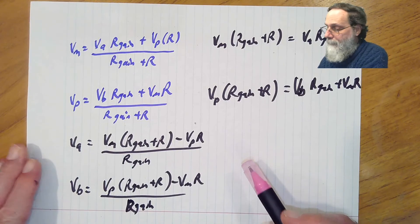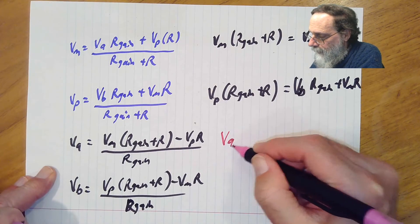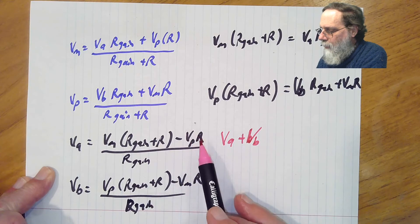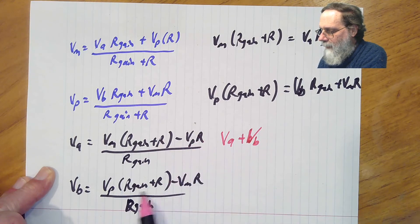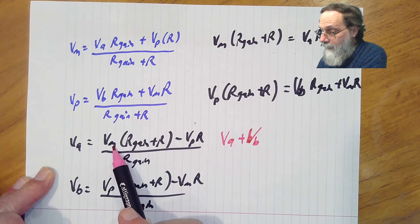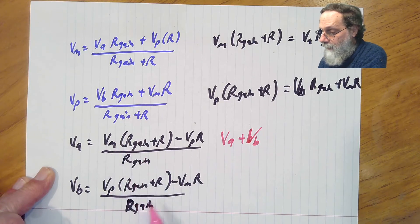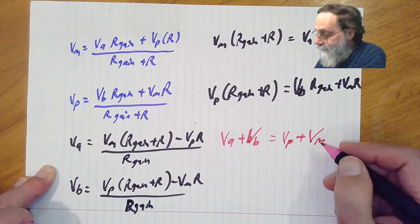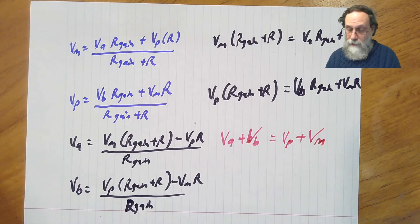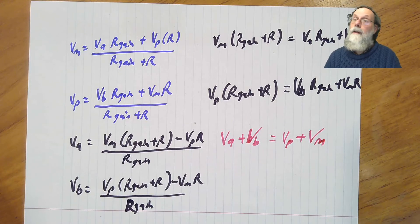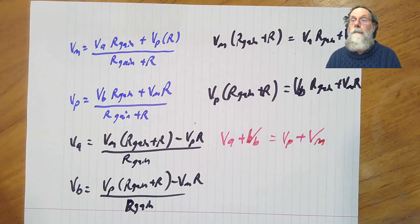But things simplify a lot when we look at the sum and the difference. What happens when we look at the sum? Va plus Vb. Everything's going to be over R gain. We're going to have the minus Vp R and the plus Vp R here. Those are going to cancel. And the Vm R and the minus Vm R are going to cancel. So we'll be left with Vm times R gain over R gain and Vp times R gain over R gain, or just Vp plus Vm. And what that's saying is that the common mode of our output signals here, Va plus Vb over 2 is going to be Vp plus Vm over 2. The common mode has not changed at all. We've done no amplification of the common mode. We haven't suppressed it. We haven't gotten rid of it. But we haven't made it any bigger.